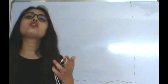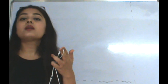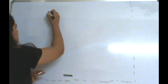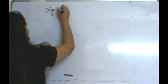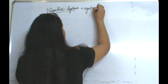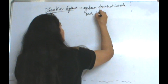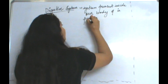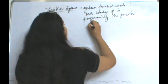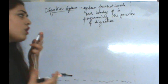So what is the digestive system? The digestive system is the system present inside our body, and it is helping in the digestive processes taking place inside our body. It is a system present inside our body performing the function of digestion. As you all know, we are eating food substances which are very complex, so that complex food needs to be converted into a simpler form.